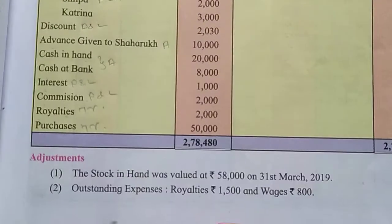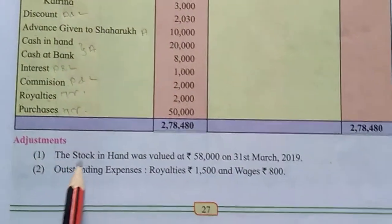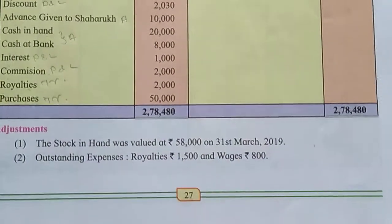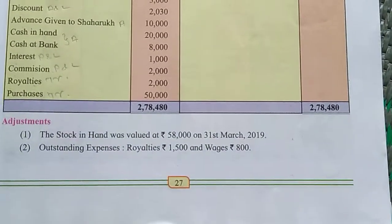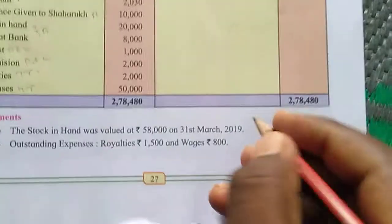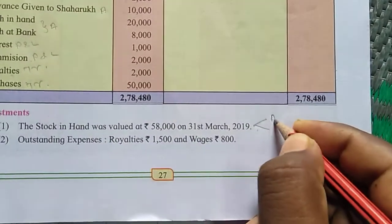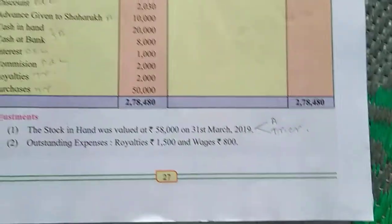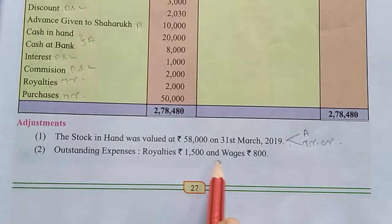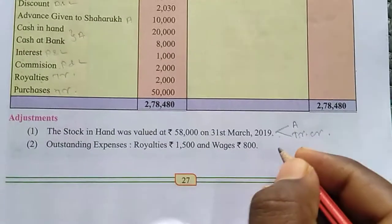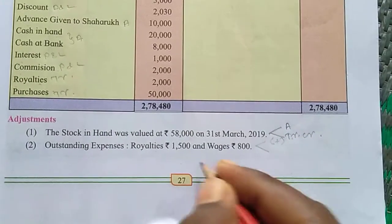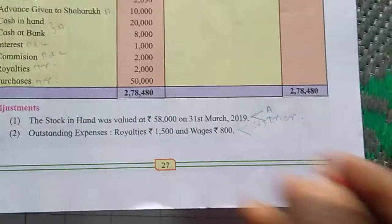Then start the adjustments. First, the stock in hand was valued at Rs. 58,000 on 31st March 2019. There are two effects. First one goes to assets, and the second one goes to the trading account, credit side. Then second: outstanding expenses — royalty Rs. 1,500 and wages Rs. 800. Both are additions to royalties and wages. The second effect is liabilities.